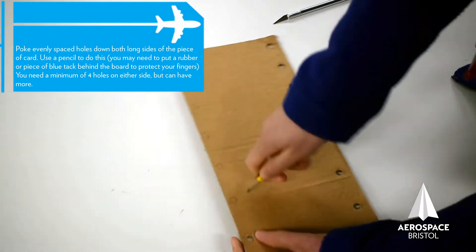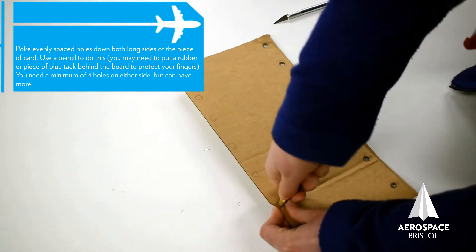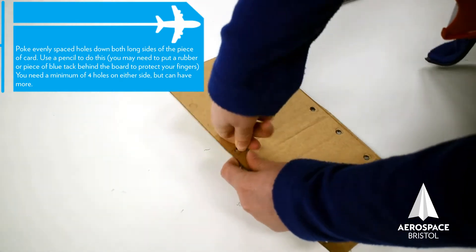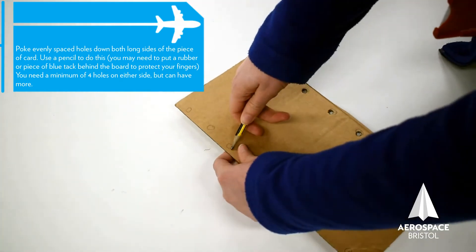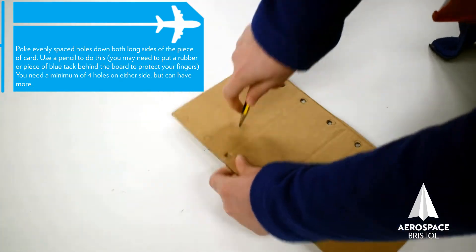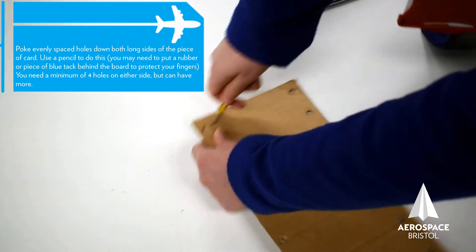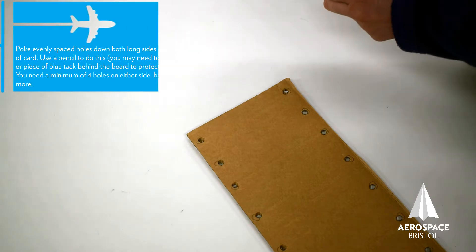And then back down the other side. Don't make them too close to the edge. You don't want it to tear. The stronger the cardboard you use for this, the easier.